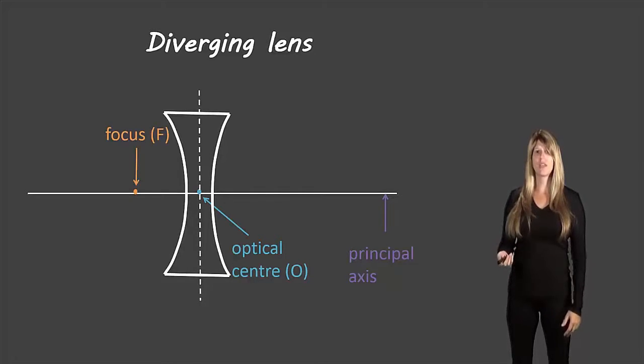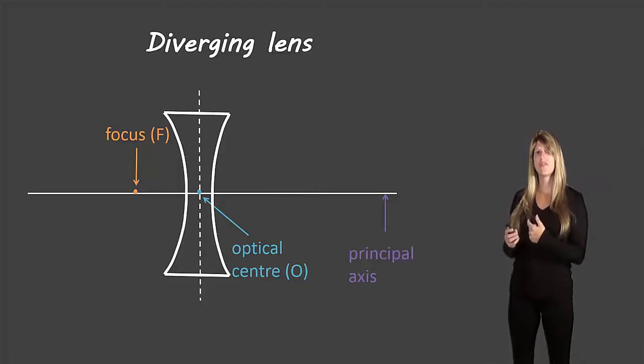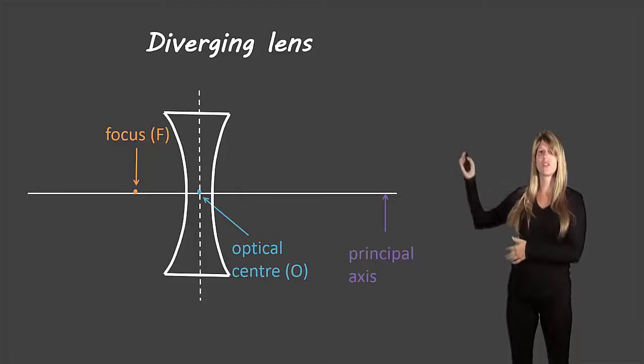We also have the focus F. Now if you'll notice the focus is on the different side of the lens compared to what we saw with the converging lens. In the case of a diverging lens, the definition of the focus is where the lens or where the light rays appear to come from as they diverge through the lens.